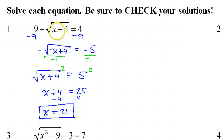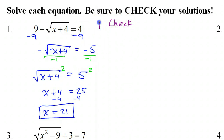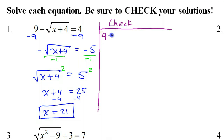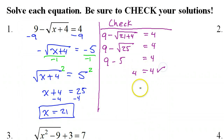If you plug it back in and get an imaginary number, that's a problem. Plugging in 21: that's 9 minus the square root of 21 plus 4, checking whether it equals 4. That's 9 minus the square root of 25, which is 9 minus 5. And yes, 9 minus 5 equals 4, so it checks out. x equals 21 really is the solution.